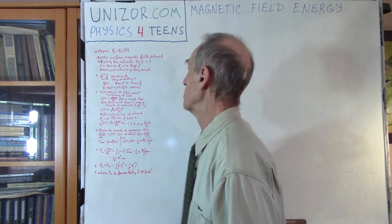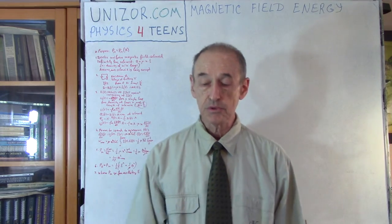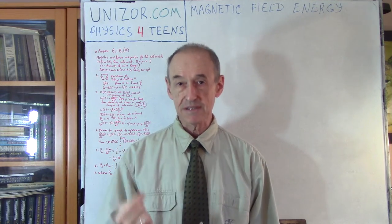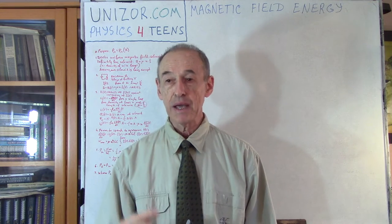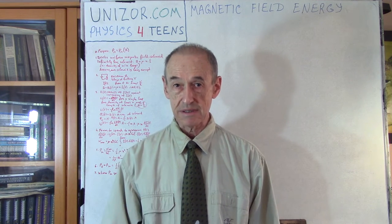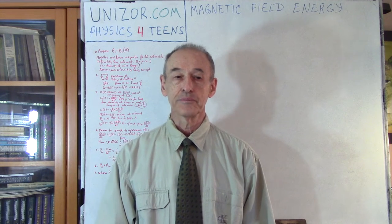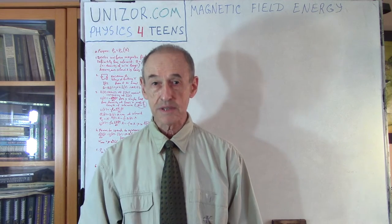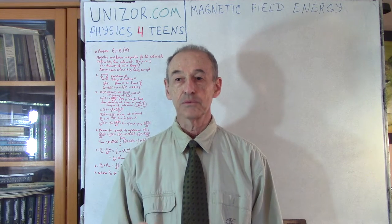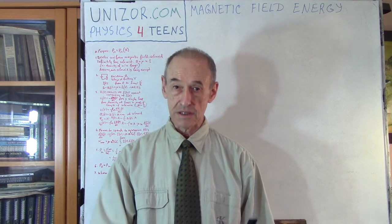Let's go to magnetic field energy. From the previous lecture, I derived the energy density of the electric field based on a local characteristic of the field, which is intensity of the field — sometimes called just 'field,' but I prefer to call it field intensity. In this lecture I will do exactly the same: I will derive the formula for density of the energy of the magnetic field based on its intensity — magnetic field intensity.